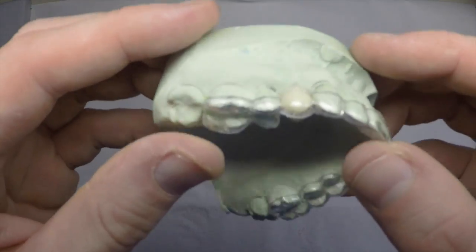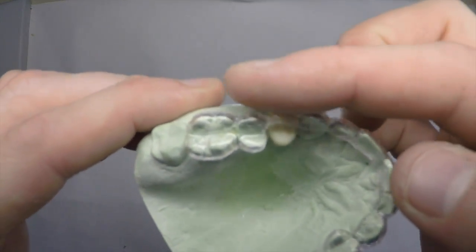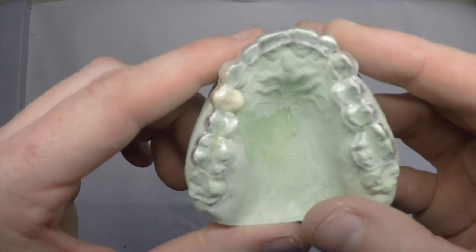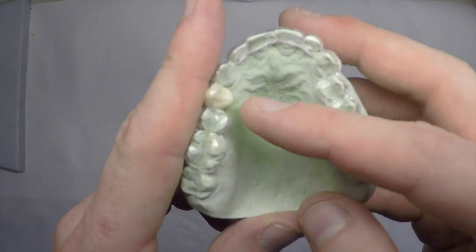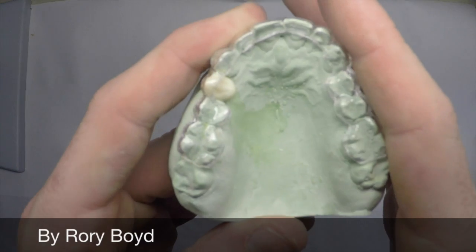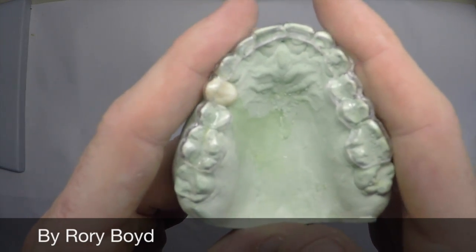We mark the gingival margin and also the buckle wall. Therefore, when we're using our directional indicators, we have a reference point of where the buckle of the tooth is to ensure that the screw access channel will be in the correct position.